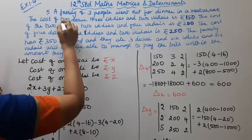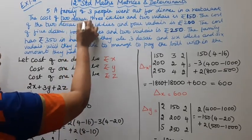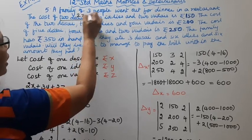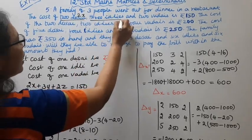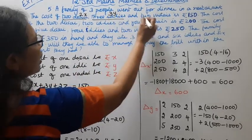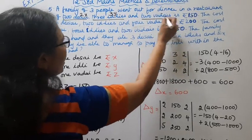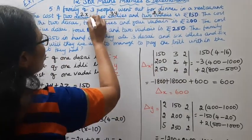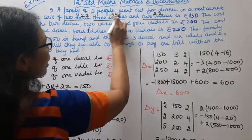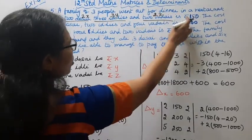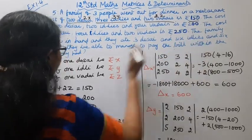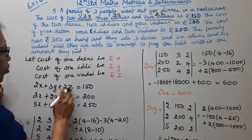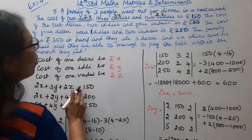So the cost of 2 dosai is 2x, 3 idlis is 3y, and 2 vadais is 2z. Therefore the first equation is: 2x + 3y + 2z = 150.